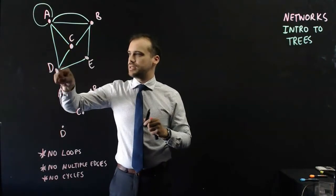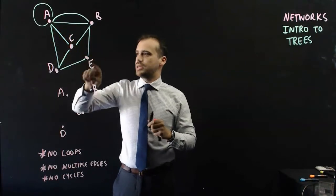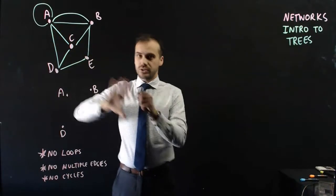So for instance, A, C, D, and back to A, that's a cycle. A, B, E, D, A, that's a cycle. So no cycles.